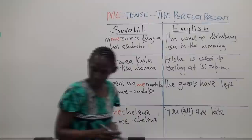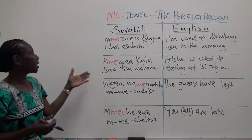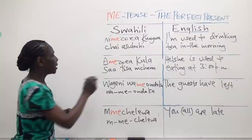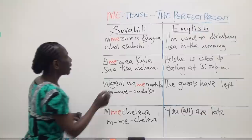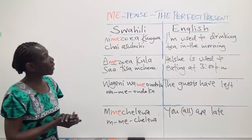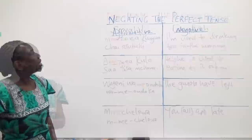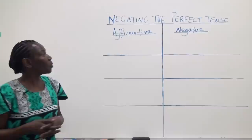As you can see from these examples, the rule is quite simple: you have the subject prefix, then the perfect tense marker ME, and then the verb. Having seen the perfect present ME in the affirmative sense, we also want to see how we negate the perfect tense ME.